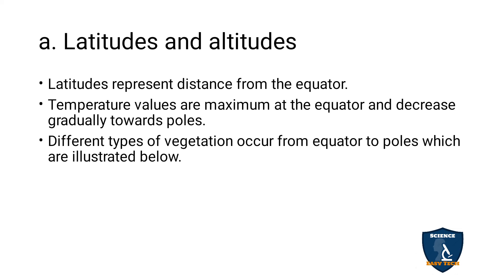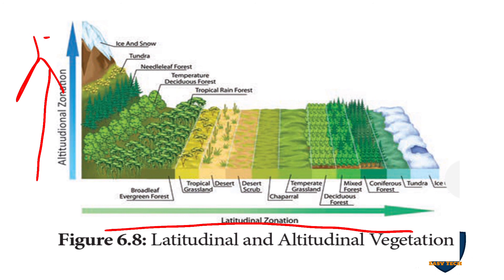Temperature values are maximum at the equator and decrease gradually towards the poles. Maximum temperature is noted at the equator and lower temperature at the poles. The different types of vegetation from equator to poles are illustrated here — you can see the variation: from the pole zone with ice, to coniferous forest and other types of forest, based on latitudinal and altitudinal position.